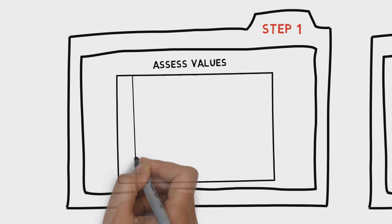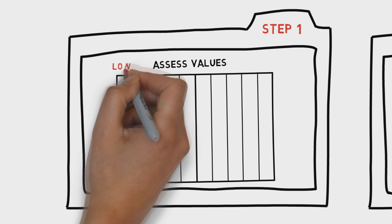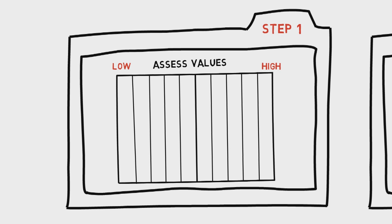Step 1: Segment information sets and assign each set a value. In other words, estimate the value of the information you are trying to protect.